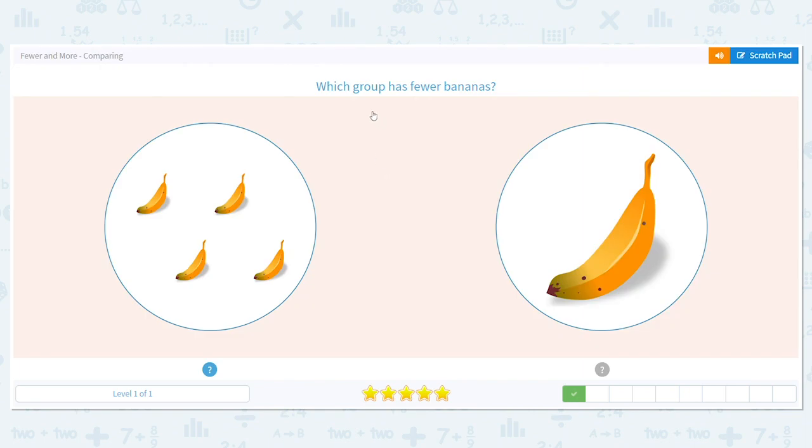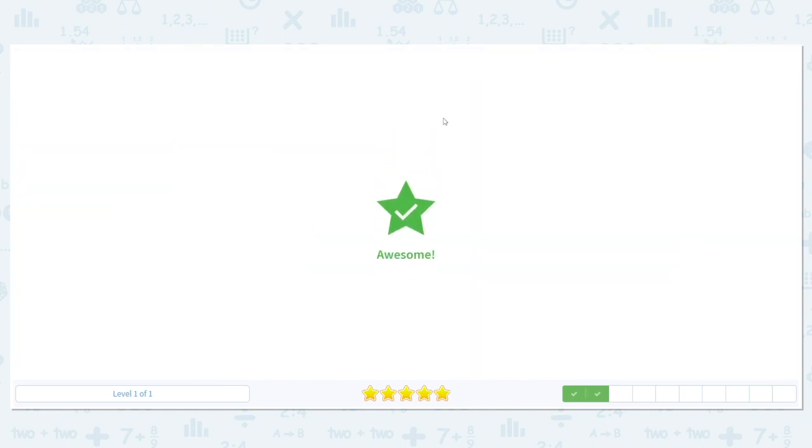Let's do another one. Which group has fewer bananas? You should be able to look at this right away and say, which one is less? This group has four. This group has one. Which has fewer? One it is. One is lower.